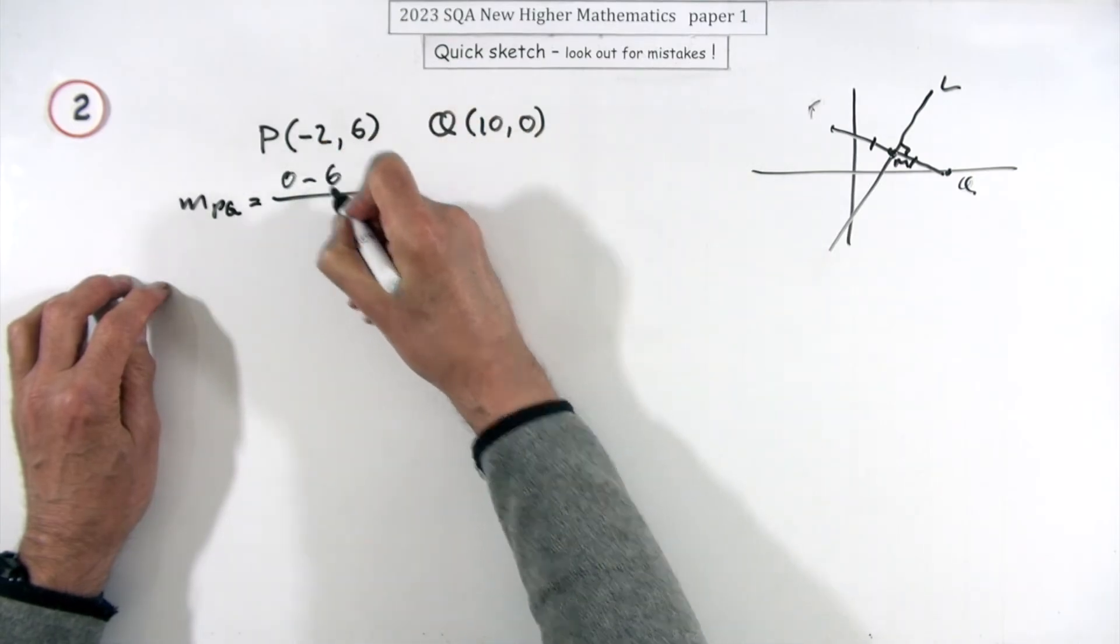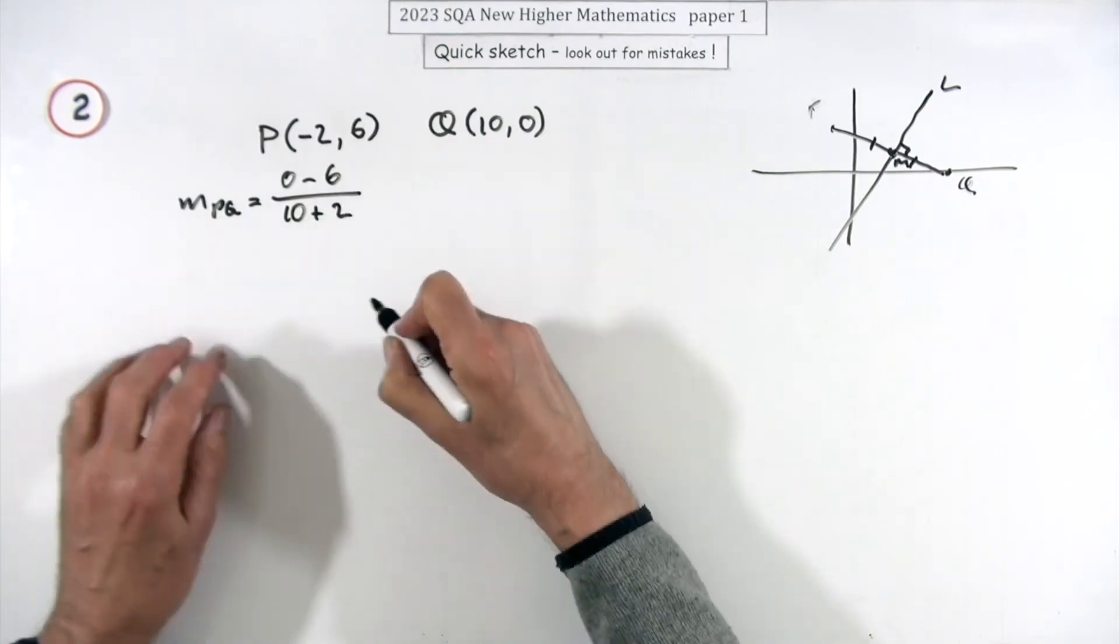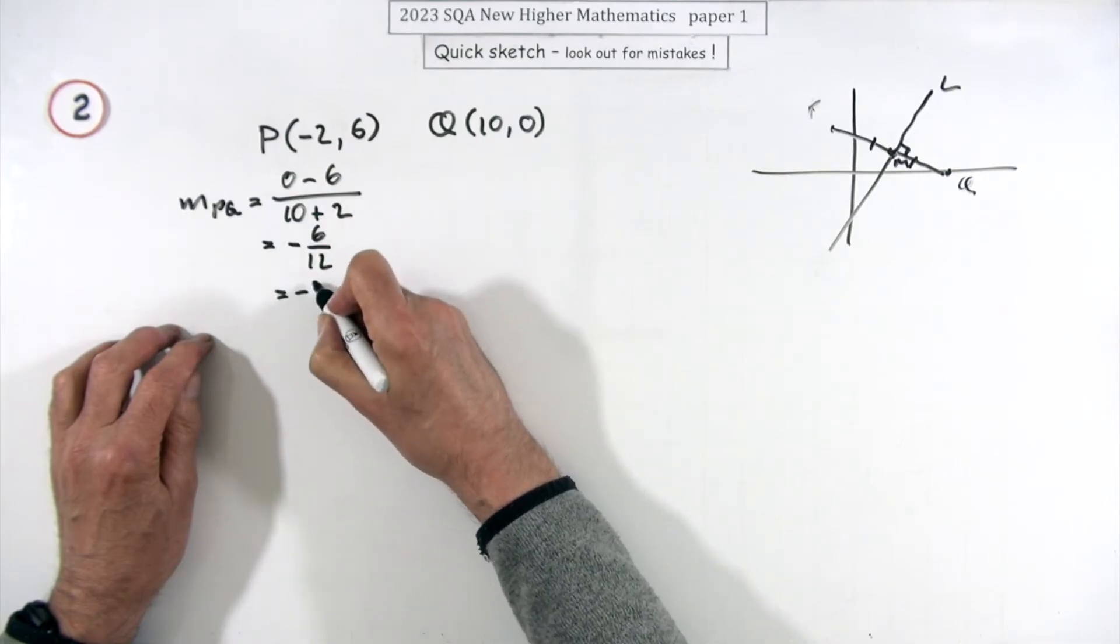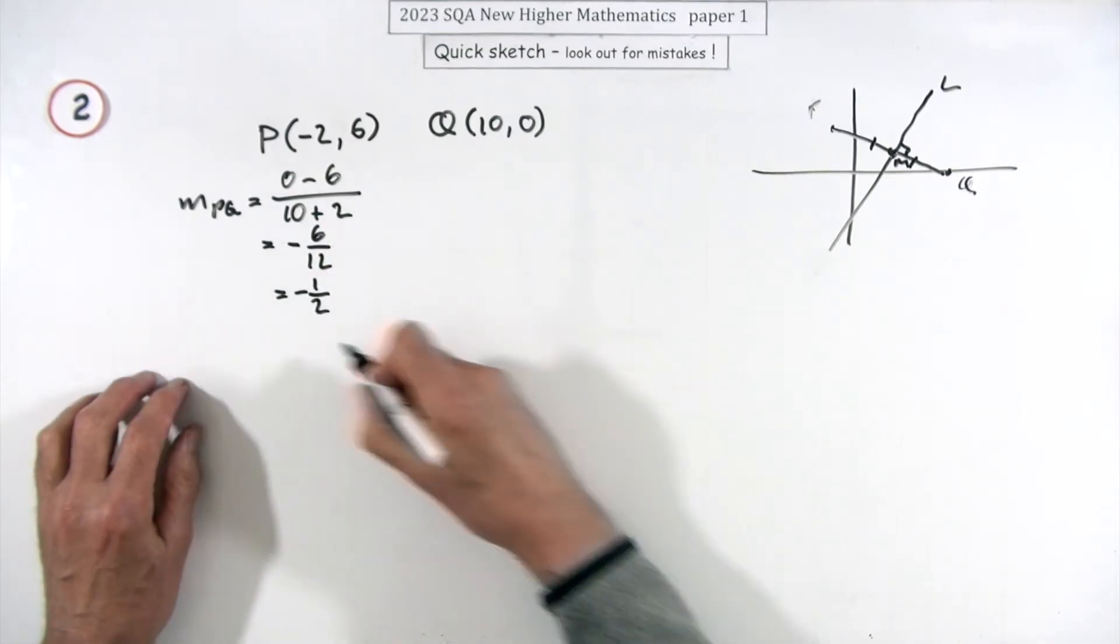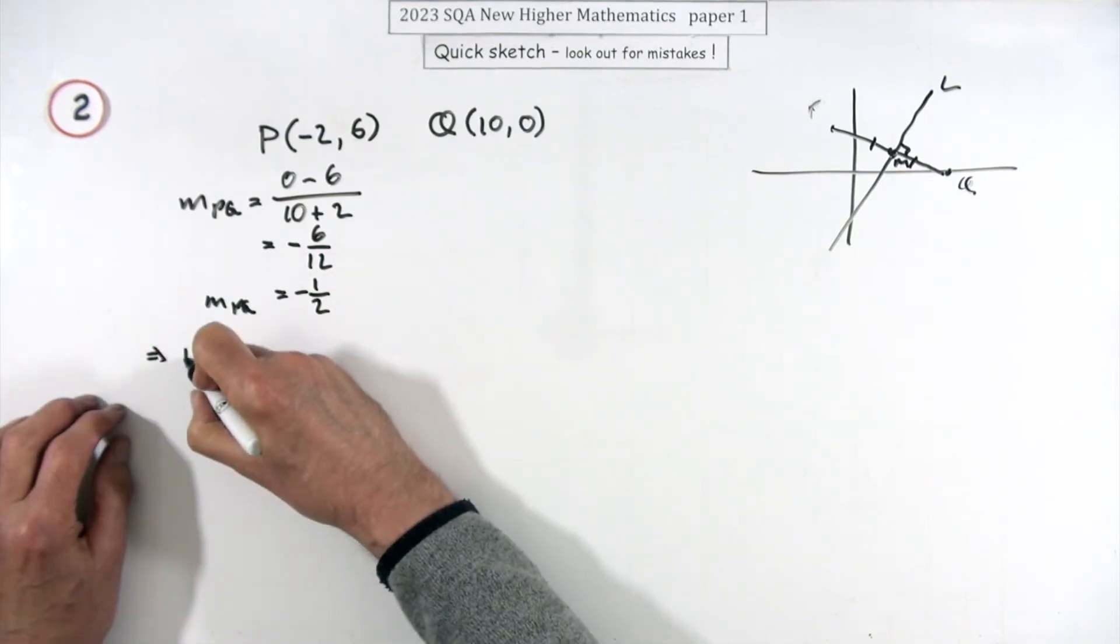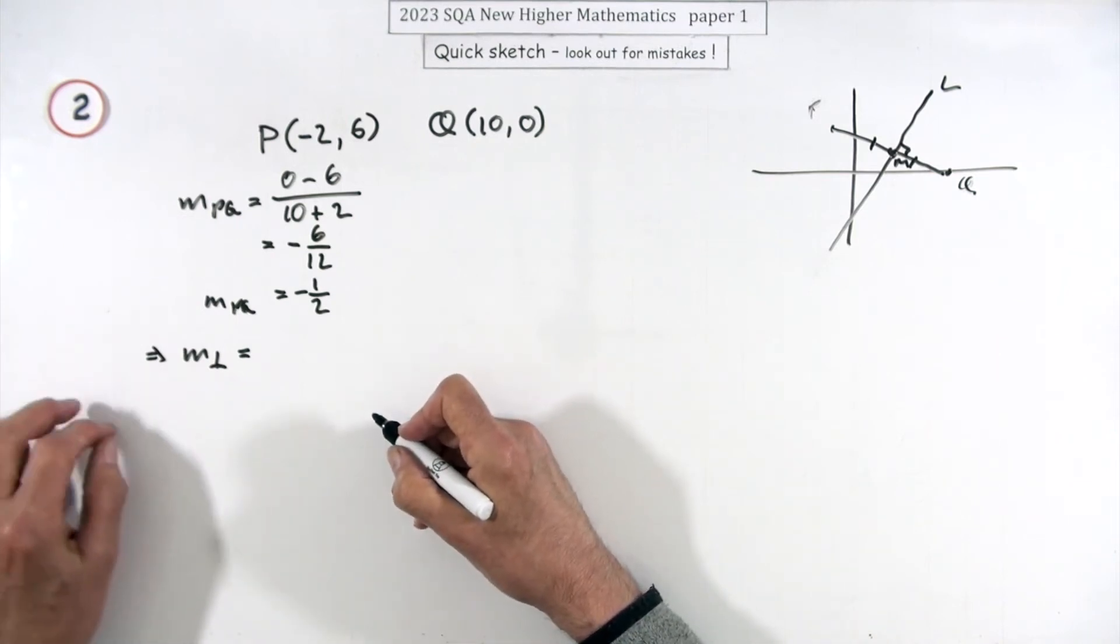So it'll be the zero take away the six for the difference in the y, the 10 take away the negative 2, so I'll put it as 10 plus 2. So it's negative 6 upon 12, which is negative a half. There's probably a mark from that.